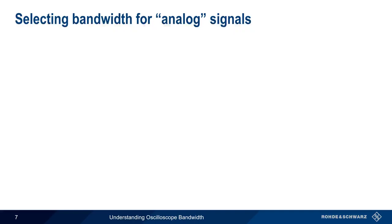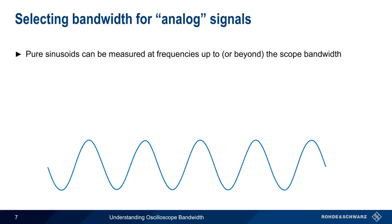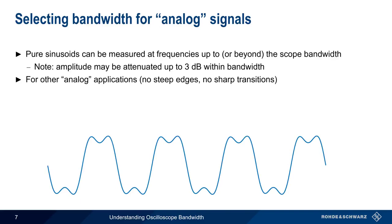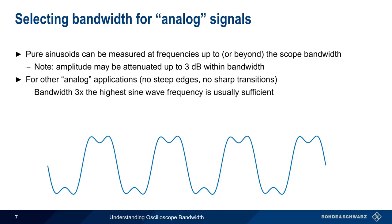Selecting an appropriate bandwidth for analog signals is actually rather straightforward. A purely sinusoidal signal can be measured at frequencies up to, and even beyond, the scope's bandwidth. The shape of the waveform won't be significantly distorted, but the amplitude may be attenuated up to 3 dB as the bandwidth limit is approached, and will be attenuated even more once the bandwidth limit is crossed. For other analog signals — that is, signals without steep edges or sharp transitions — a bandwidth of 3 times the highest sine wave frequency is usually sufficient to avoid serious distortion. Using a bandwidth of 3x means our scope should be able to accurately measure the fundamental, second harmonic, and third harmonic. We'll talk more about harmonics on the next slide.